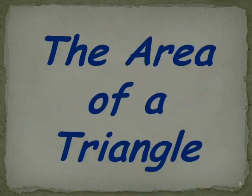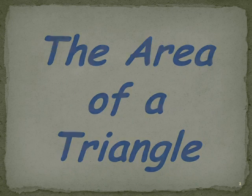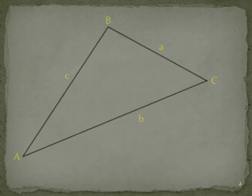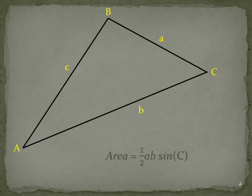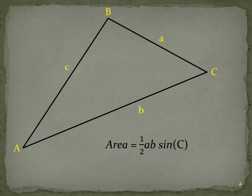We're now going to use trigonometry to find the area of a triangle. So let's start with a triangle. We've labelled it. And here's our formula. The area of a triangle is a half AB sin C.